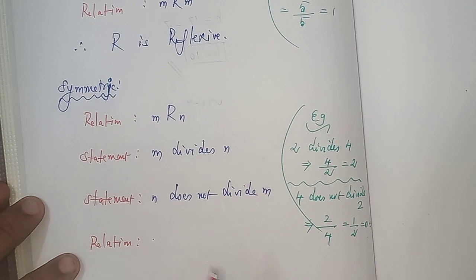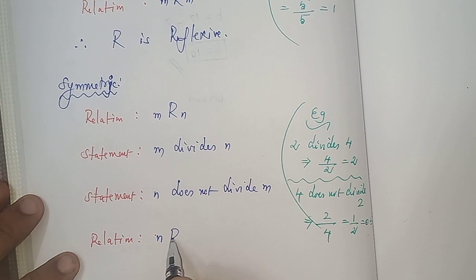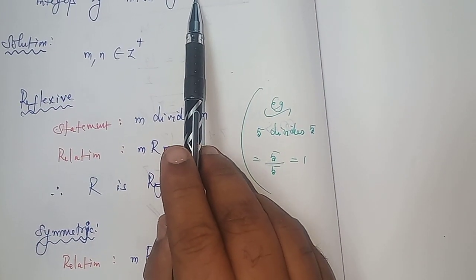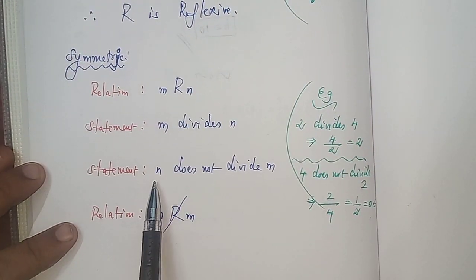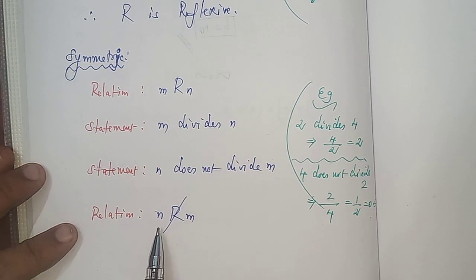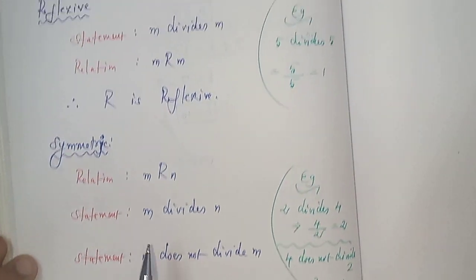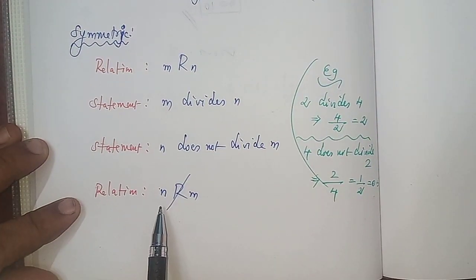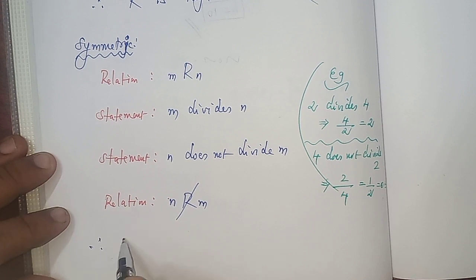So n does not divide m means n is not related to m. The statement m divides n holds, but n does not divide m, meaning n is not related to m. We started with m is related to n but n is not related to m. Therefore R is not symmetric.